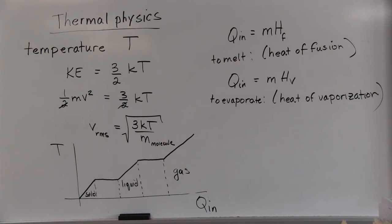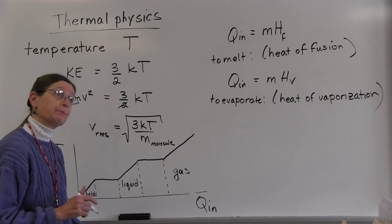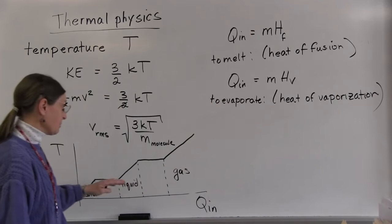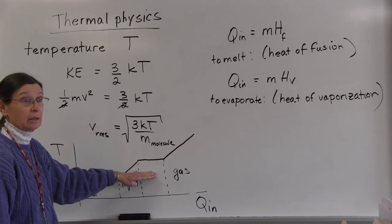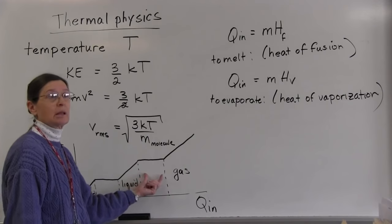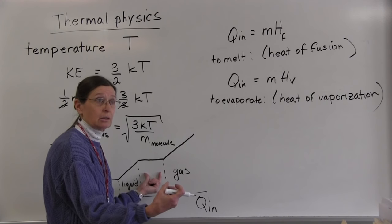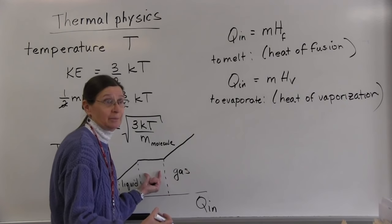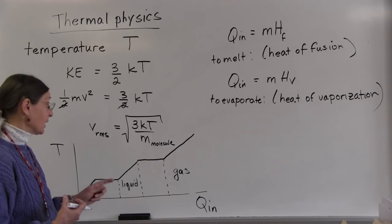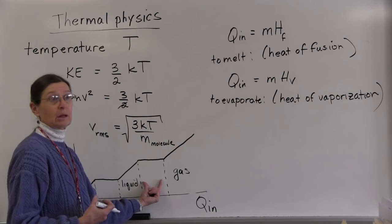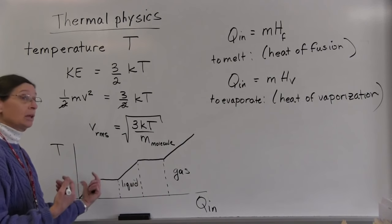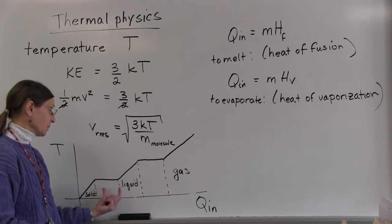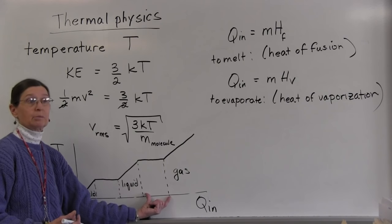Why does the heat in increase without the temperature increasing? The heat in is the amount of heat that you are putting into the system, but the temperature does not increase while it is evaporating, because the energy is going into the breaking of the bonds rather than into increasing the motion. Temperature does not increase while it's melting or evaporating. But once it has all melted, if you put in more heat, then the temperature starts to rise again. This region would be a solid-liquid mixture, and this would be a liquid-gas mixture.